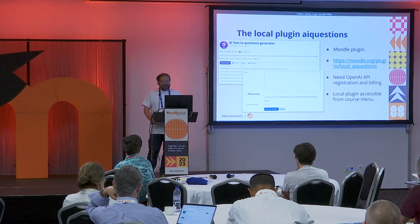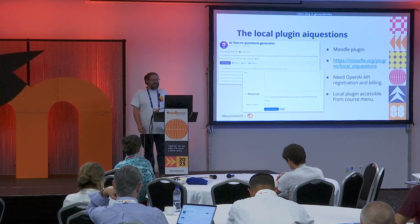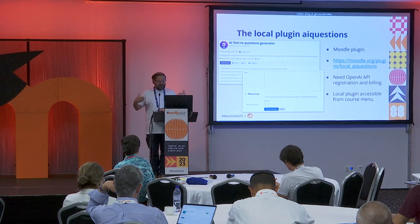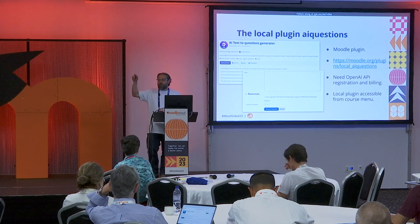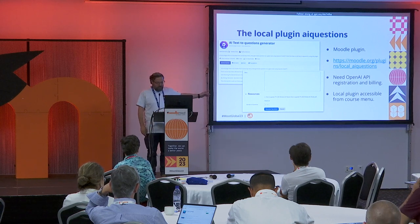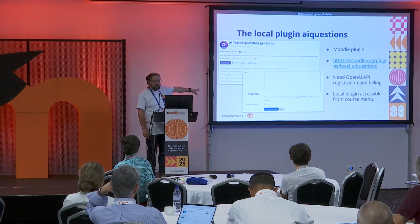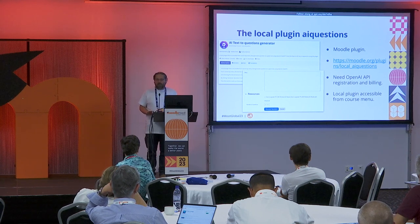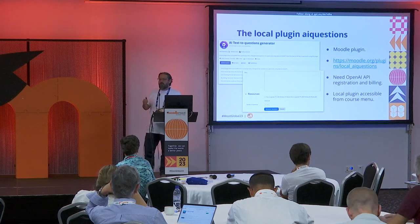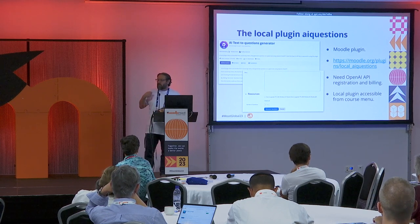The nicer way is the AI text-to-question generator plugin, which does exactly the same thing but inside Moodle. You don't have to exit Moodle at all — you go from the course menu, choose the 'AI questions' option, and get to the page. There is also an option to use resources from the course, though not implemented yet. It's planned for the new version, so you won't even need to copy and paste your resources — it will read them directly from the course.